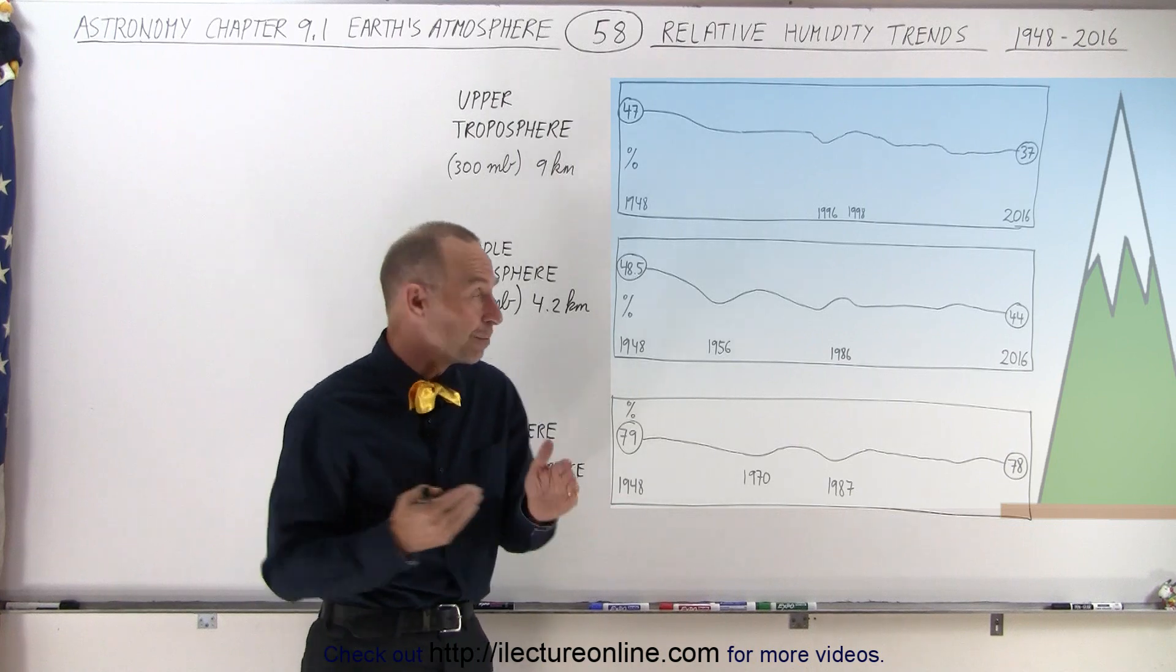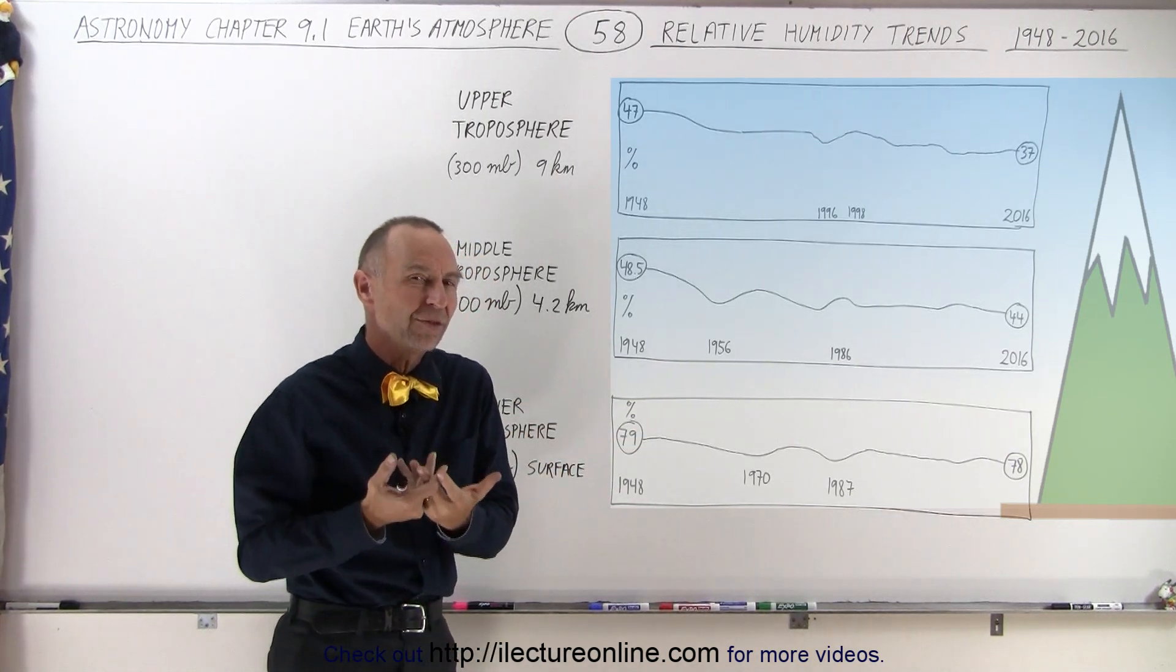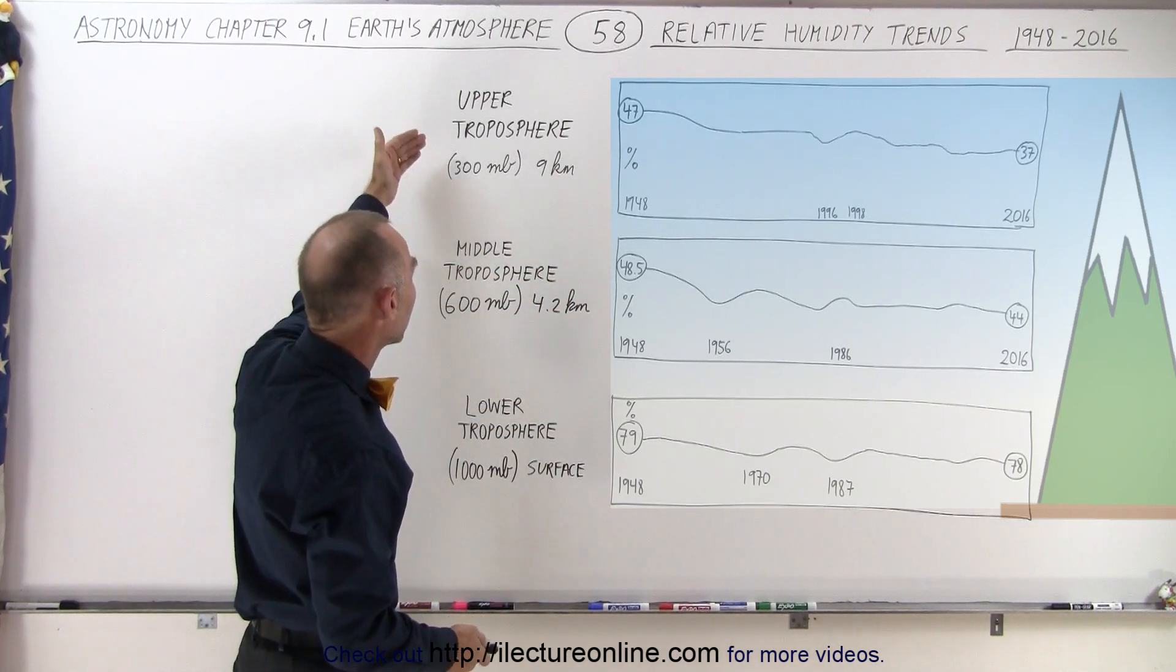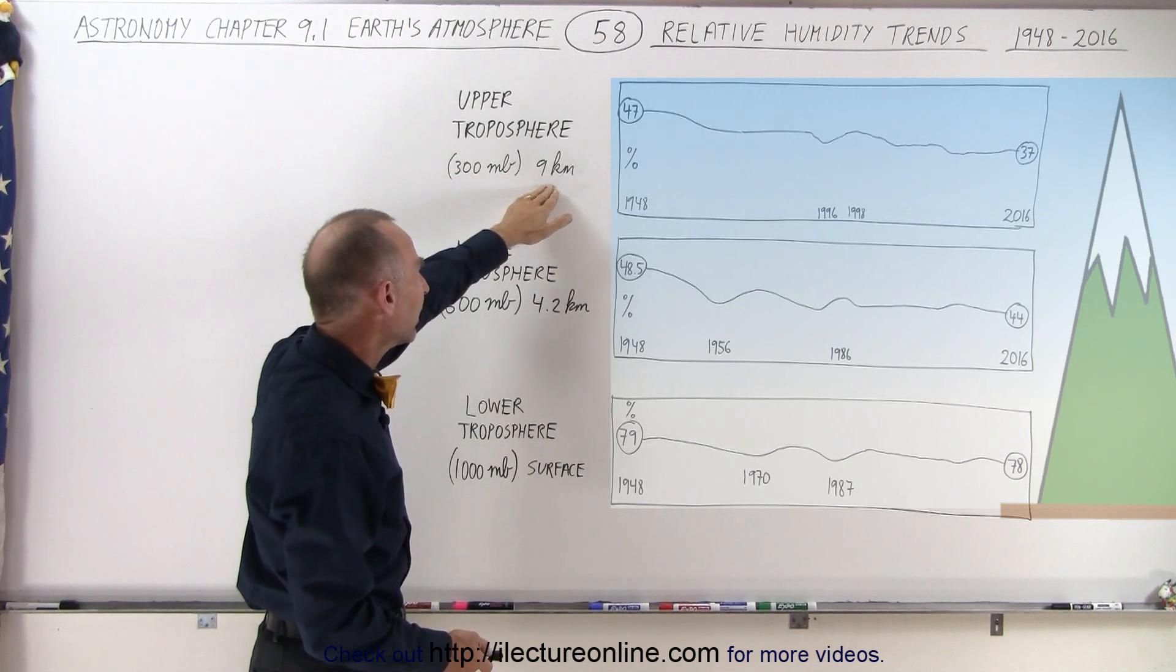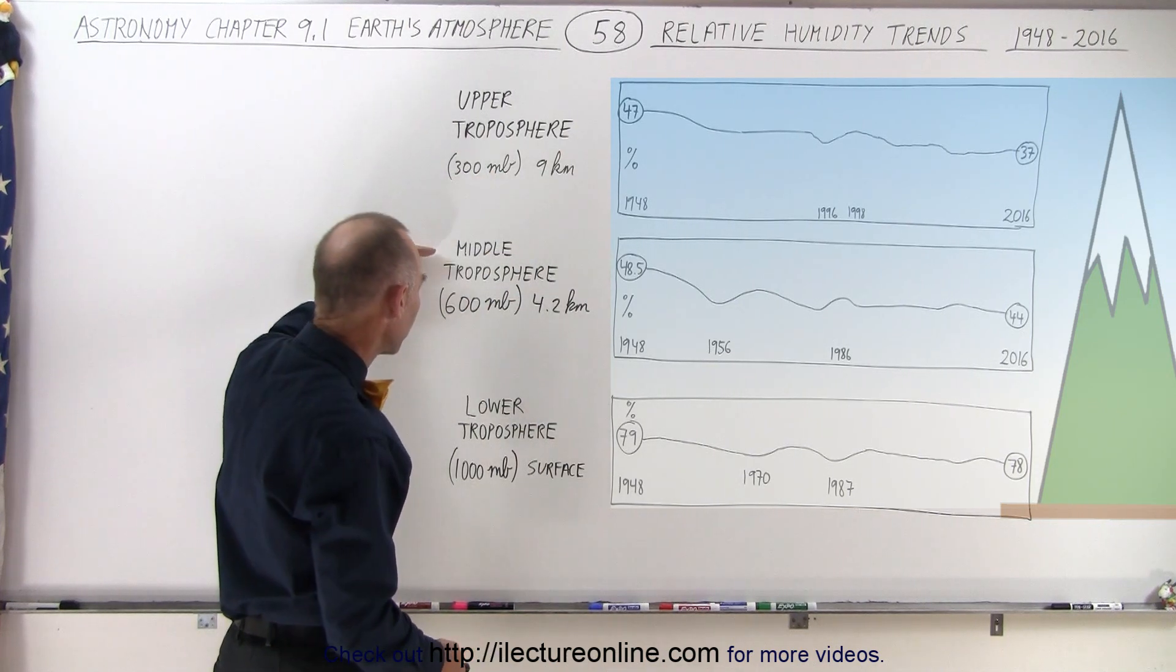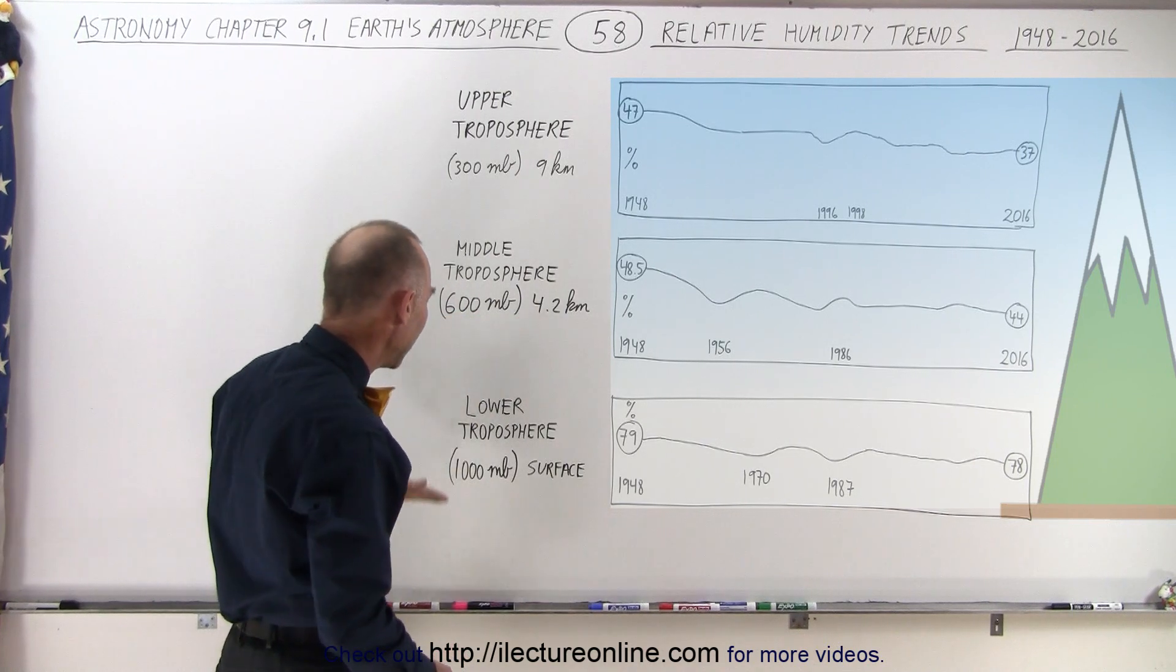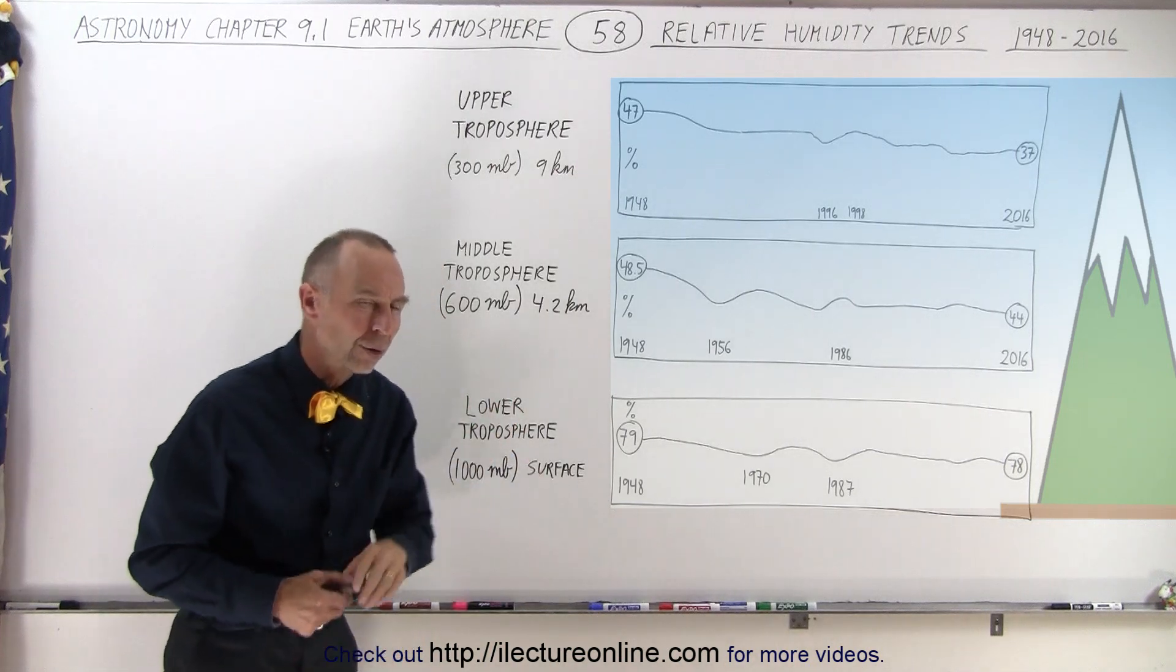Going back far enough, we can get a pretty good idea of what the water content of the atmosphere was over years in past history. We can look at the upper troposphere at a pressure of 300 millibars, which is about 9 kilometers up, the middle troposphere at 600 millibars, about 4.2 kilometers up, and the lower troposphere at a thousand millibars, which is not very high over the surface.